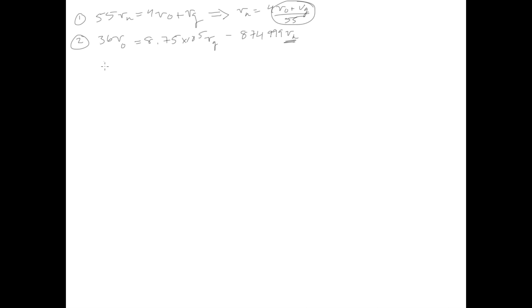So we know that from equation 2, 36V0 equals 8.75 times 10 to the 5th Vg minus 874999Vn, which now we actually have an equation for. Vn is just equal to, like I circled above, 4V0 plus Vg over 55.